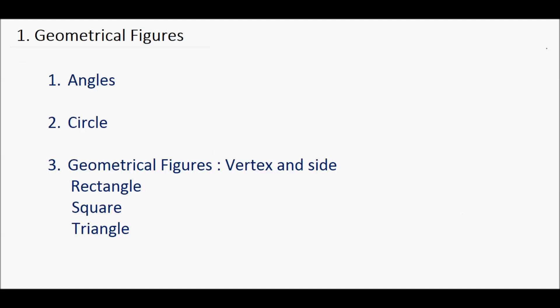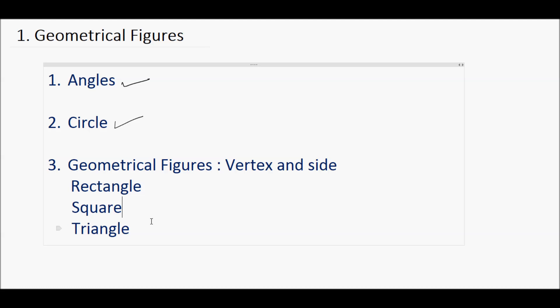In this video we learned about angles, circle, and vertex and sides of a rectangle, square, and triangle. In angles we learned there are three types: right angle, acute angle, and obtuse angle. In circle we learned what is called diameter and radius. In geometrical figures, a rectangle has four sides with opposite sides of equal length, a square has all four sides of equal length, and a triangle has three vertices and three sides. Thank you for watching. In the next video we will learn chapter two, which is number work.